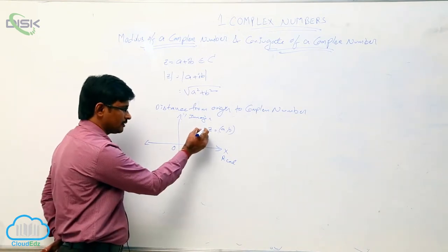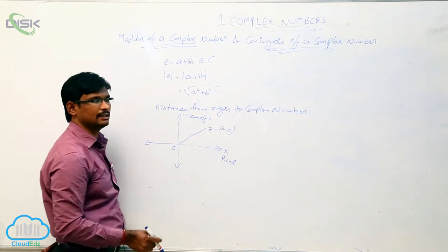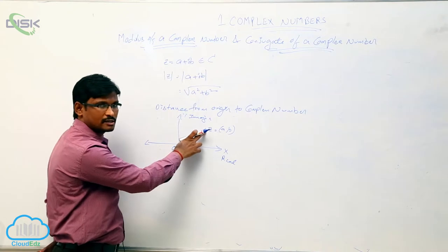If we join O and z, this is nothing but the modulus of complex number.